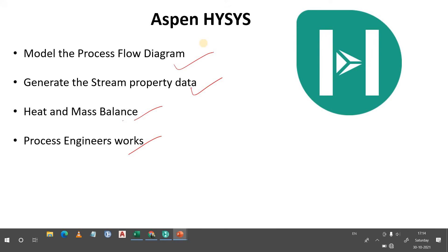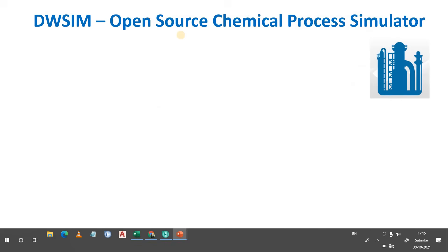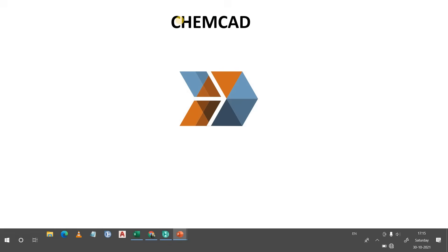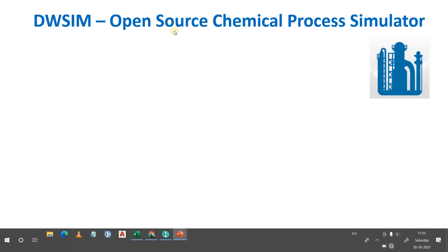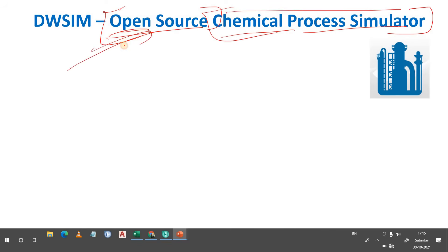Aspen HYSYS is not freely accessible — you cannot download it as a student without purchasing a license or a package to learn it. If you are in industry, you can learn it there. This brings us to two alternative softwares: CAMDAC and DW-SIM. DW-SIM is an open-source chemical process simulator. If you want to learn chemical process simulation, DW-SIM is the open-source option — you do not need to purchase it, you can easily download it and perform your process simulation work.